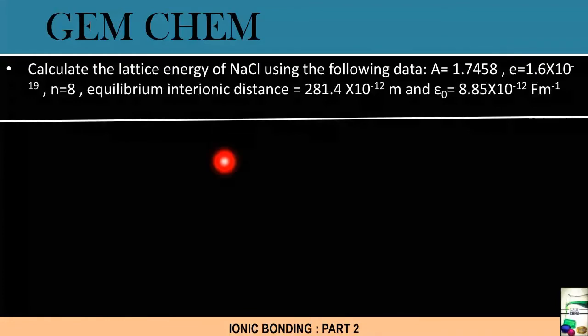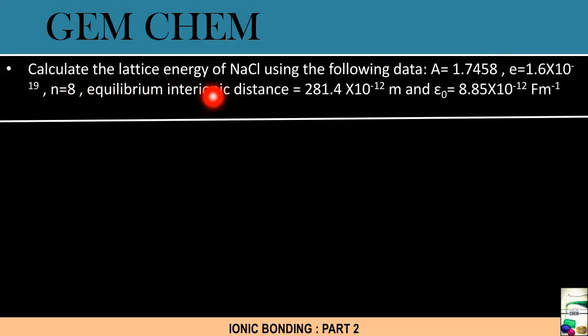First question tells us to calculate the lattice energy of NaCl crystal using the following data: A, which is the Madelung constant, is given; e value is given as 1.6×10⁻¹⁹; N value is 8; and the equilibrium interionic distance R₀ is given as 281.4×10⁻¹² meter. The R value is given in meter and ε₀ value is also given to be 8.85×10⁻¹² Faraday per meter.